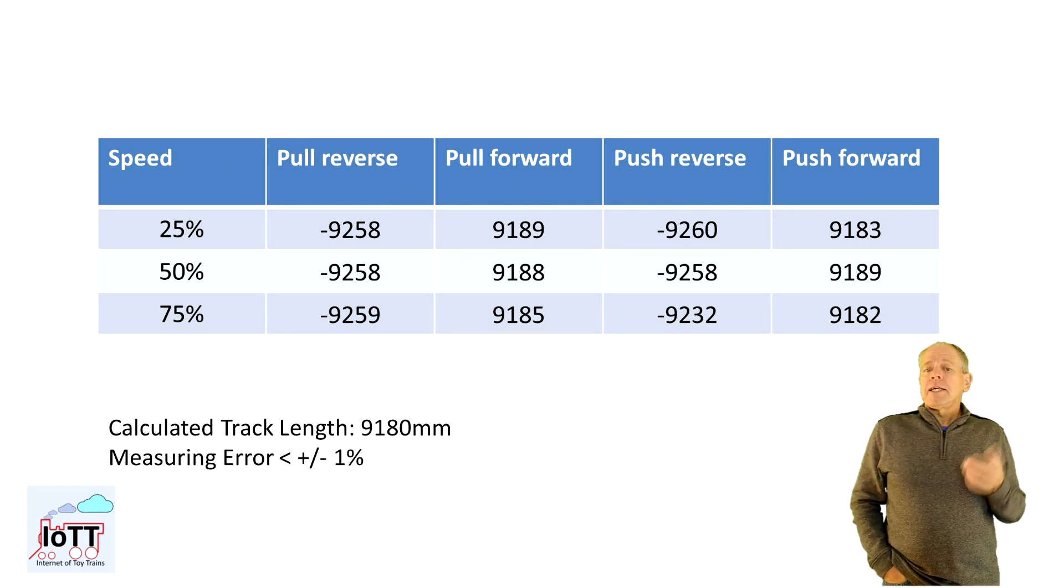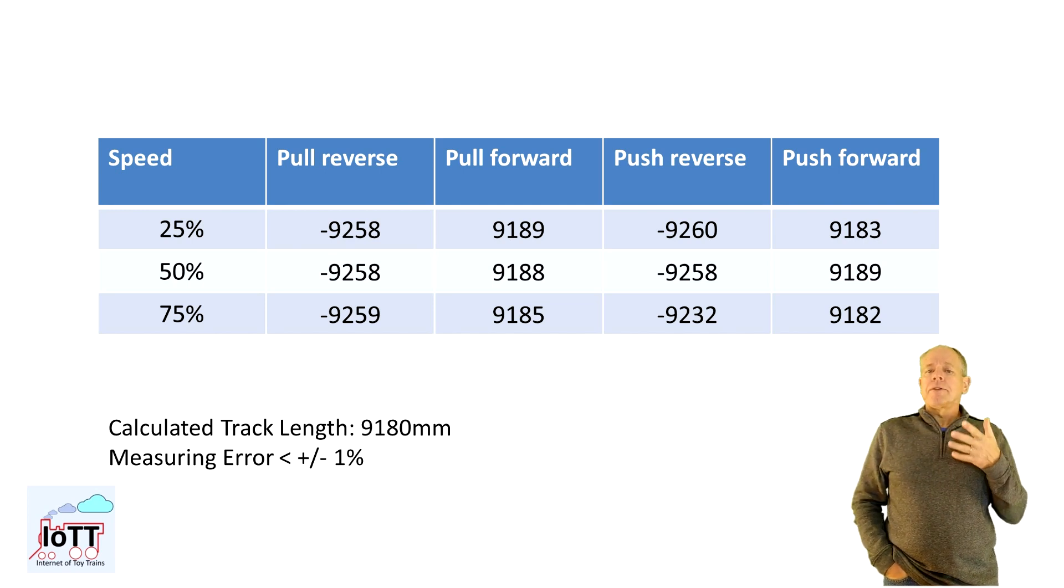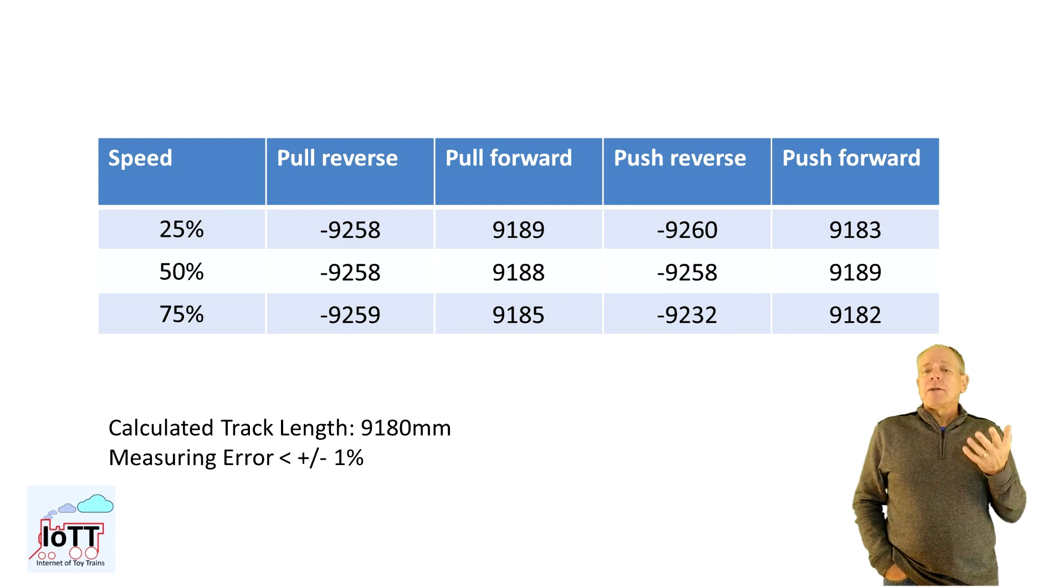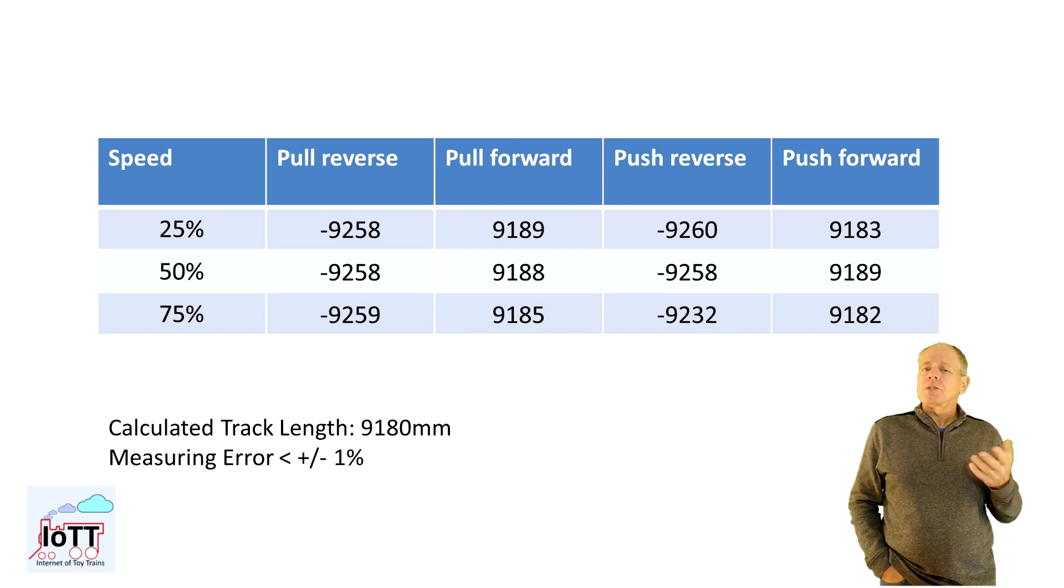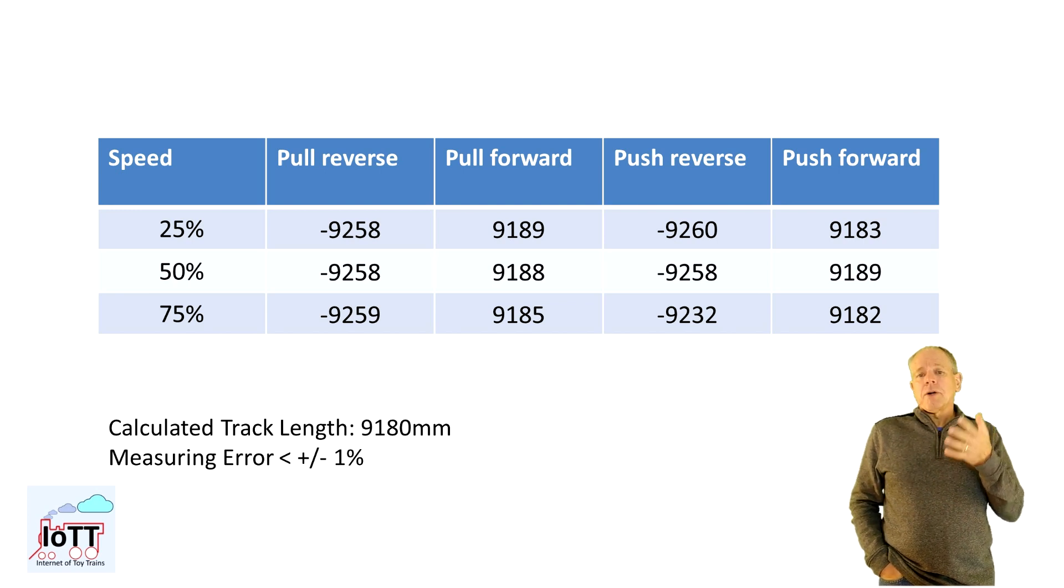I then ran all the other tests and here is the table with the results. As we can see, there is a deviation depending on direction and pushed versus pull. At the moment I have no explanation for this, but what is interesting is that the amount is very close to one wheel revolution. I will investigate that further, but chances are that there is a calculation error when changing direction. I just was not able to find it so far. On the other hand, going the same way and using the same traction type, the result is independent of the speed of the locomotive, which is very good. Overall the results are within plus minus 1% of the real track length, which I think is quite acceptable.